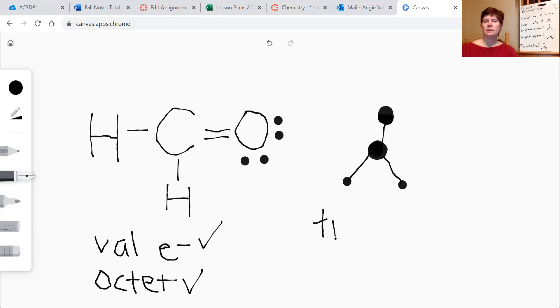So on your actual sheet, you should write this out and draw the ball and stick model. Trigonal planar. Don't confuse this with trigonal pyramid. Trigonal pyramid has a lone pair in addition to the central atom bonded to three other atoms. So trigonal planar.